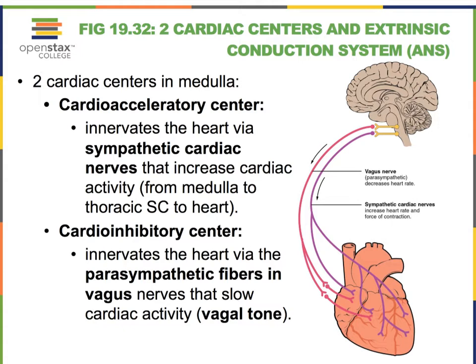Parasympathetic fibers do leave directly from the brain via the vagus nerves. We have a total of 12 pairs of cranial nerves and the vagus nerves are your 10th pair — very important nerves. The vagus nerves carry parasympathetic fibers not just to the heart, but to many different structures in the body. With the help of these parasympathetic fibers that innervate the heart via the vagus nerves, we see that cardiac activity can decrease.